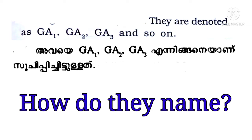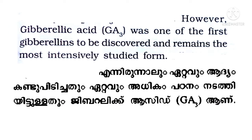Gibberellins are denoted as GA1, GA2, GA3, and so on. However, gibberellic acid GA3 was one of the first gibberellins to be discovered and remains the most intensively studied form.